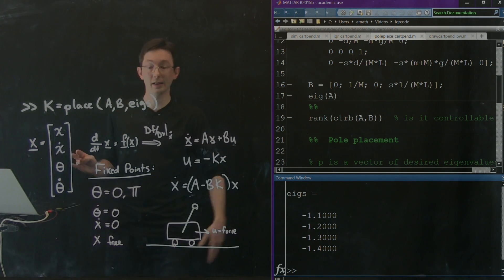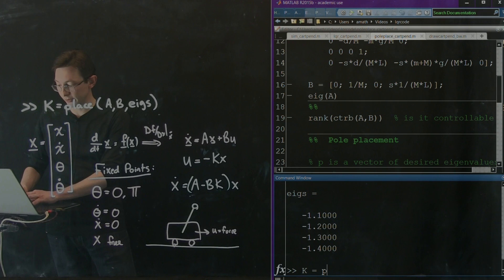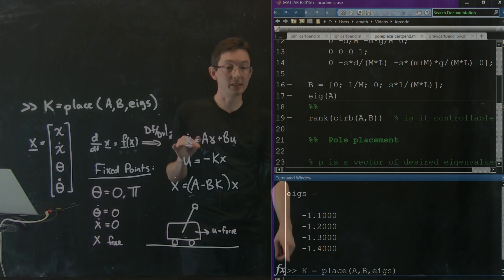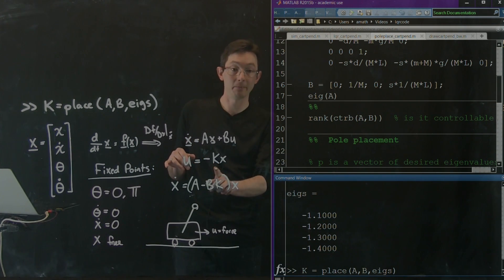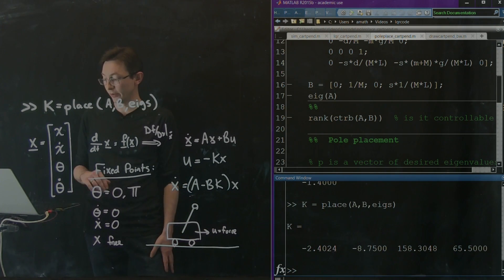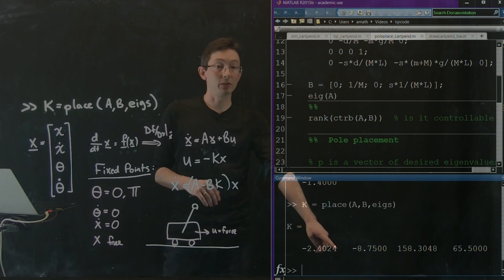I'm going to hit enter. Okay? So those are my eigs. And now I'm going to type in k equals place A, B, eigs. It's that simple. In MATLAB, it is so simple to cook up a controller k so that it has the eigenvalues where you want them to be. So that's my controller k. It's just a matrix.